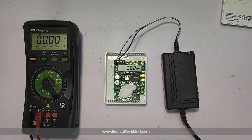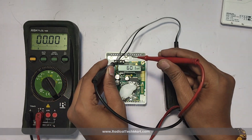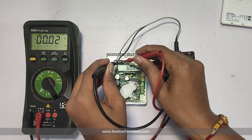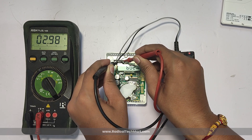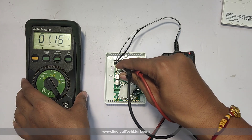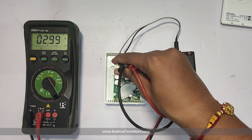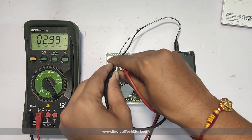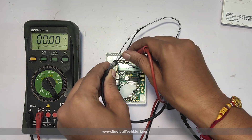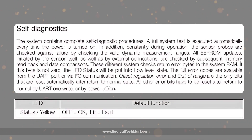During operation, the sensor probes are constantly checked against failure by verifying valid dynamic measurement ranges. All EPROM updates, whether initiated by the sensor itself or by external connections, are checked by subsequent memory read-back and data comparisons. These system checks return error bytes to the system RAM. If this byte is not zero, the LED status will be put into a low-level state. The LED indicator status descriptions can be seen on screen right now.